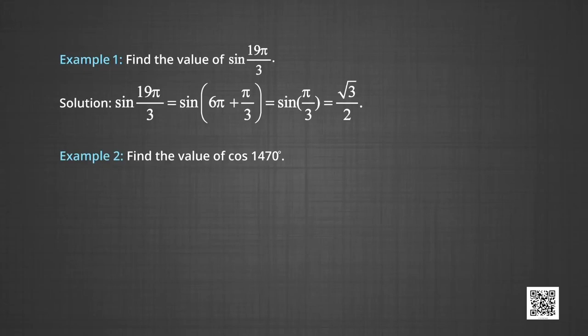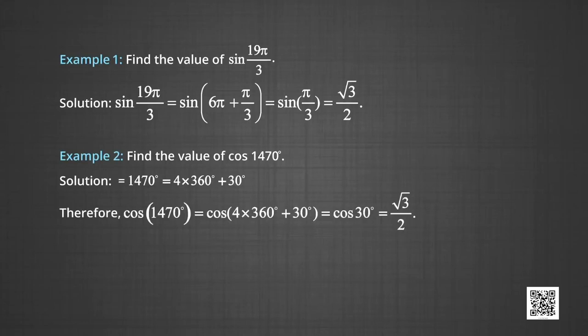In example 2, we find the value of cos(1470°). Now, 1470° can be written as 4 × 360° + 30°. Since 4 × 360° completes 4 revolutions, cos(1470°) = cos(30°) = √3/2. We also define cosec x = 1/sin x, where x ≠ nπ, and sec x = 1/cos x, where x ≠ (2n + 1)π/2, for any integer n.